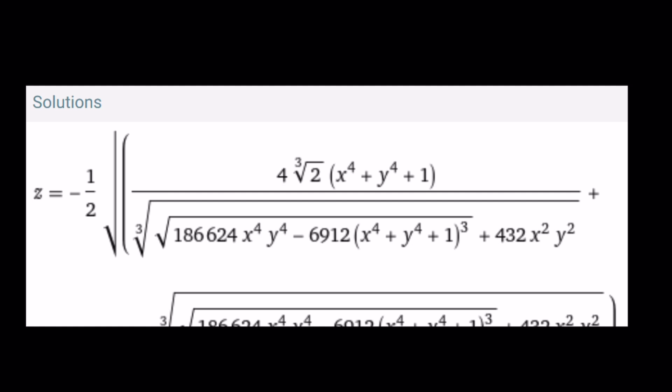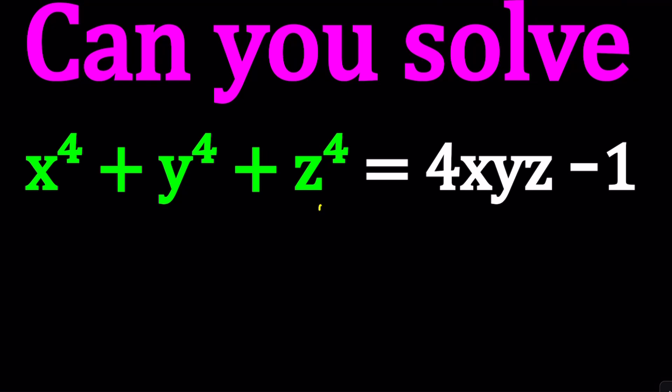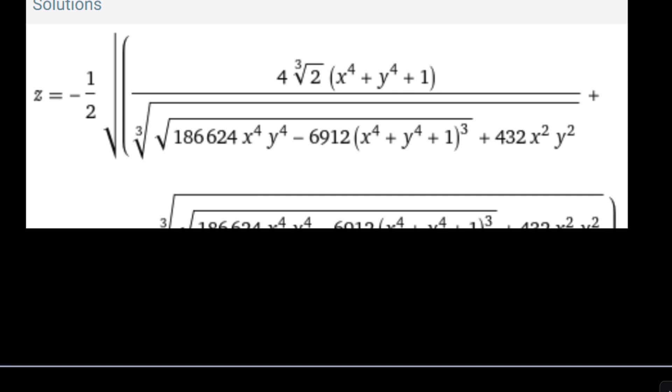I believe WolframAlpha is trying to apply the quartic formula to this expression because you can basically treat this as a quartic in z while the others are considered constants and just solve it. Anyways, so let's see how we can approach this problem.